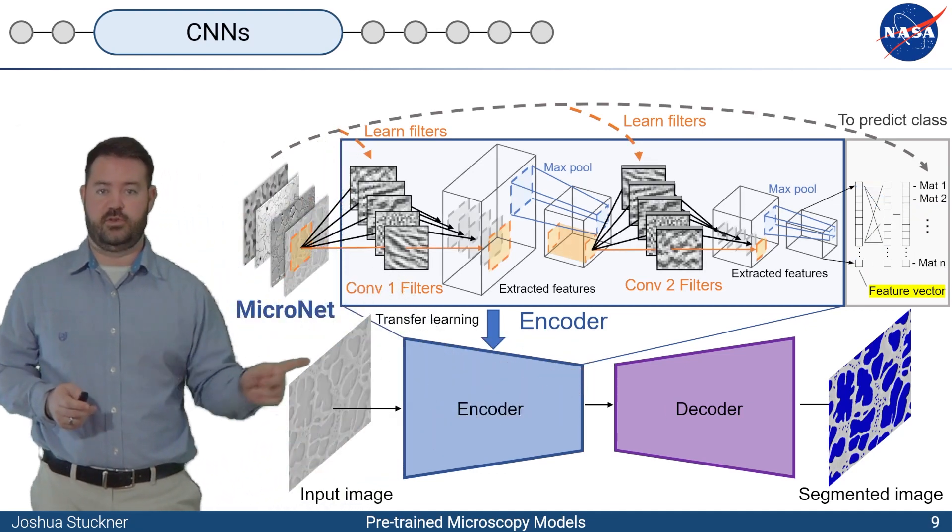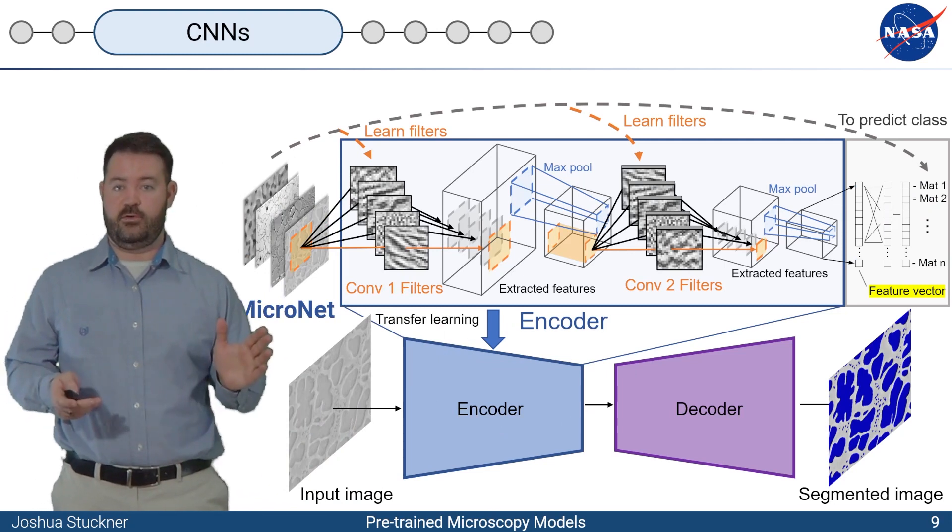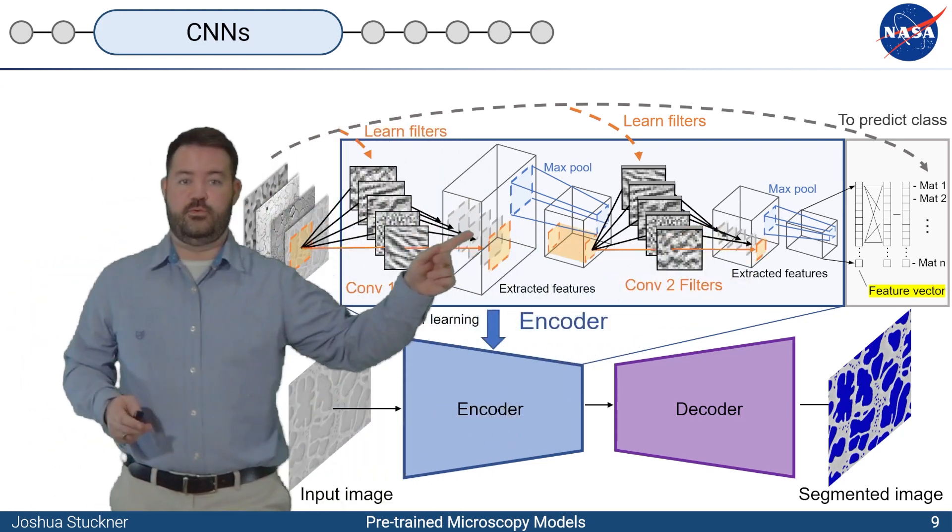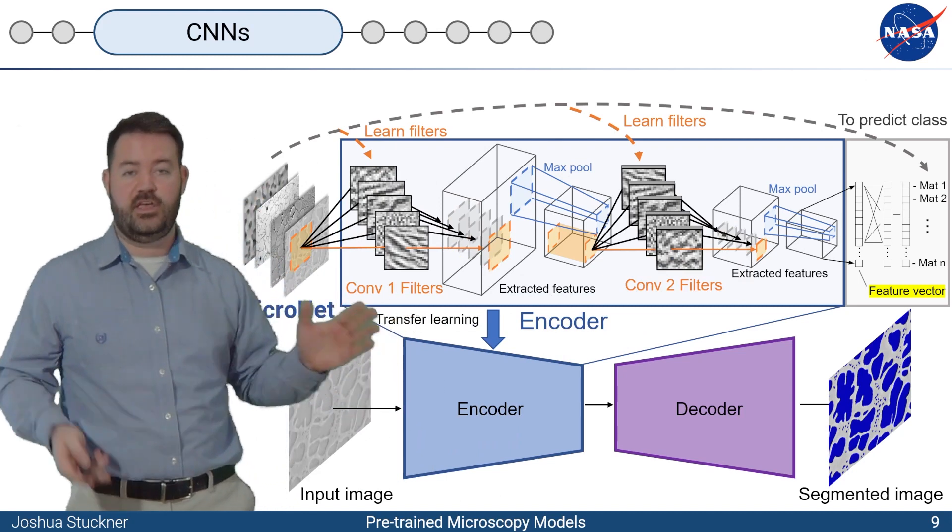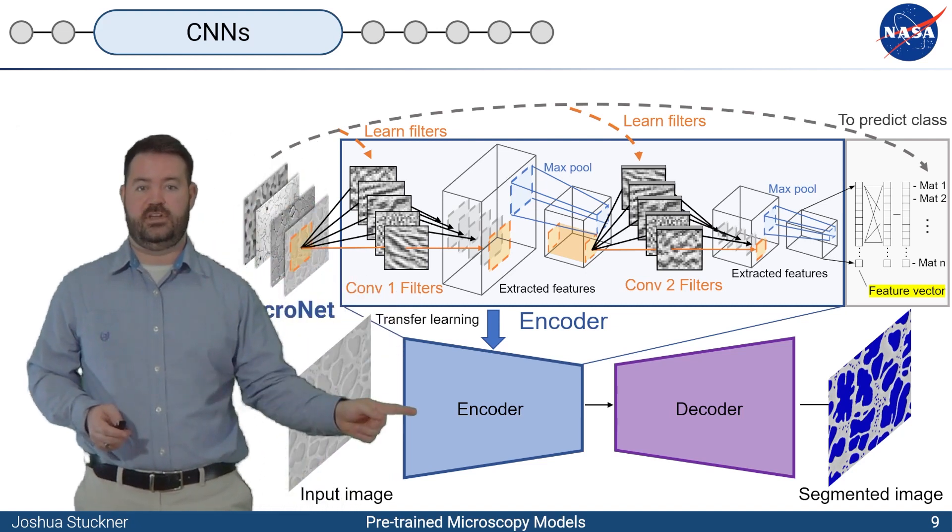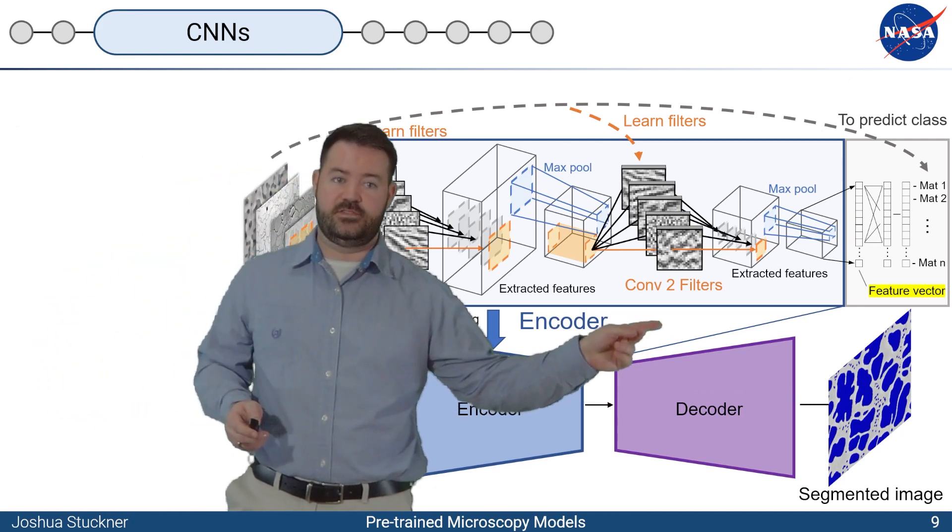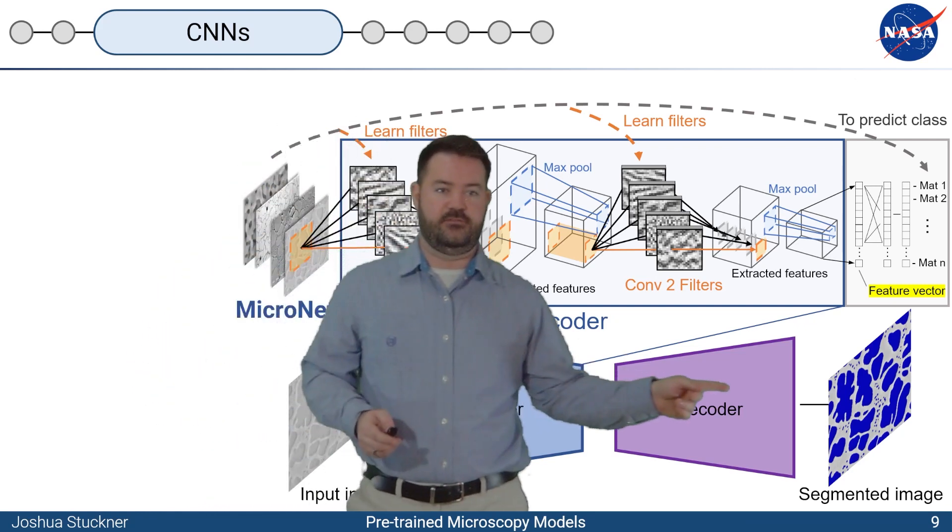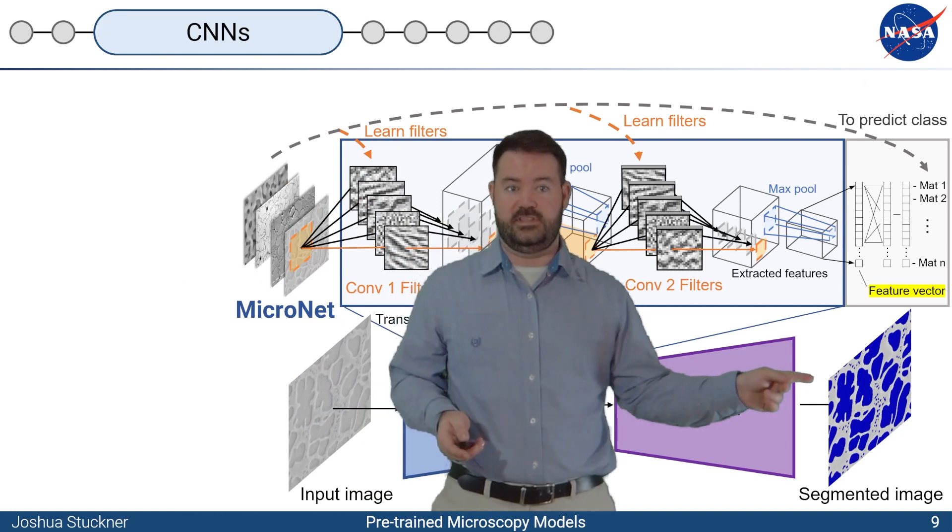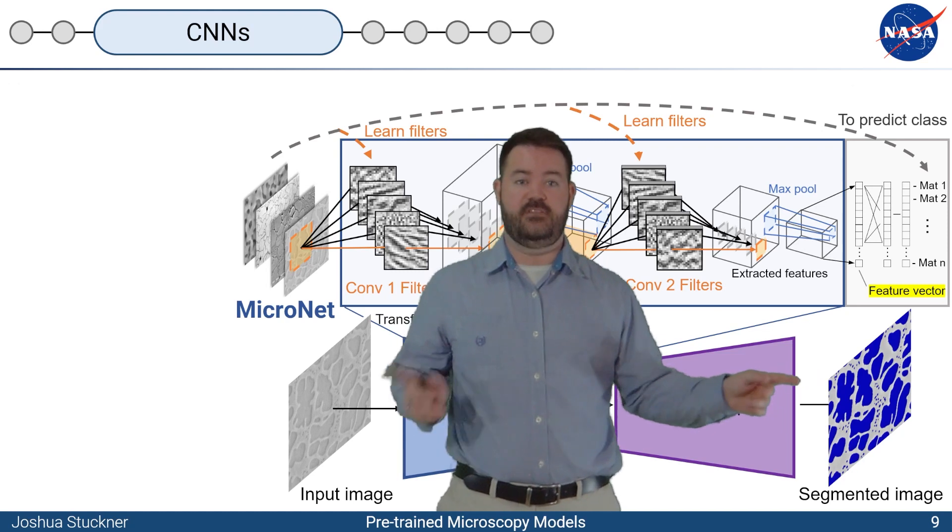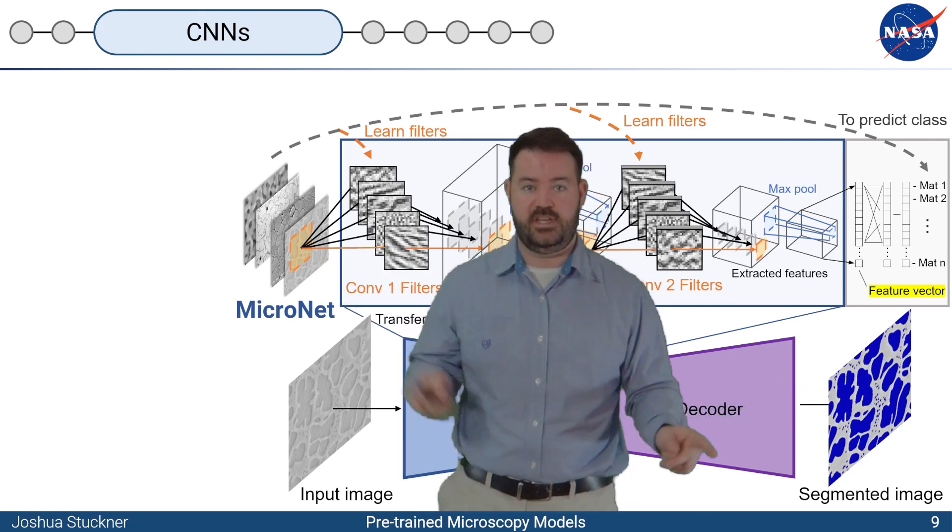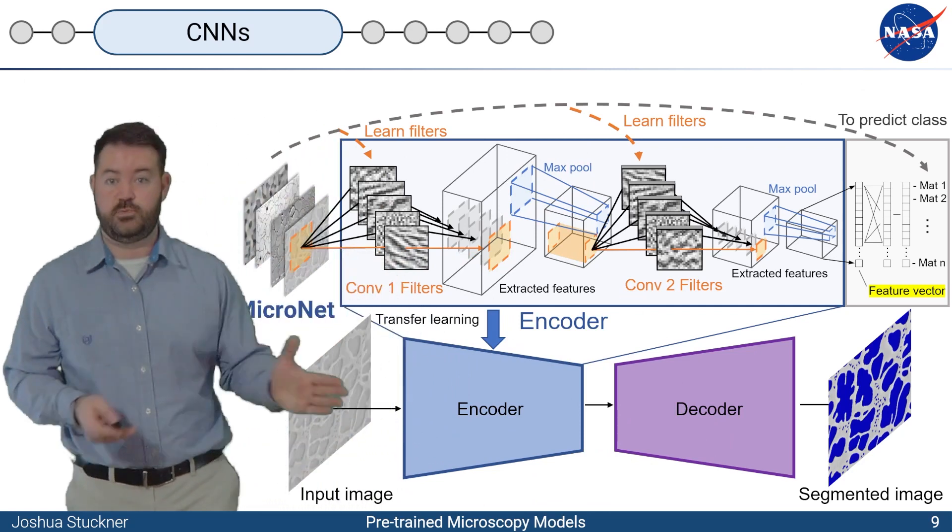So we had the same intuition that maybe those cat tail detectors wouldn't transfer so well to microscopy segmentation. And so we pre-trained encoders on 100,000 microscopy images that we had at NASA and that we found online and in the literature. And we're able to predict different materials and then apply it through transfer learning. And now the high-level filters were things like twin boundaries or grains or precipitates. So we have a microscopy-aware encoder that can be used through transfer learning in other types of datasets and we can use less training data for segmentation.